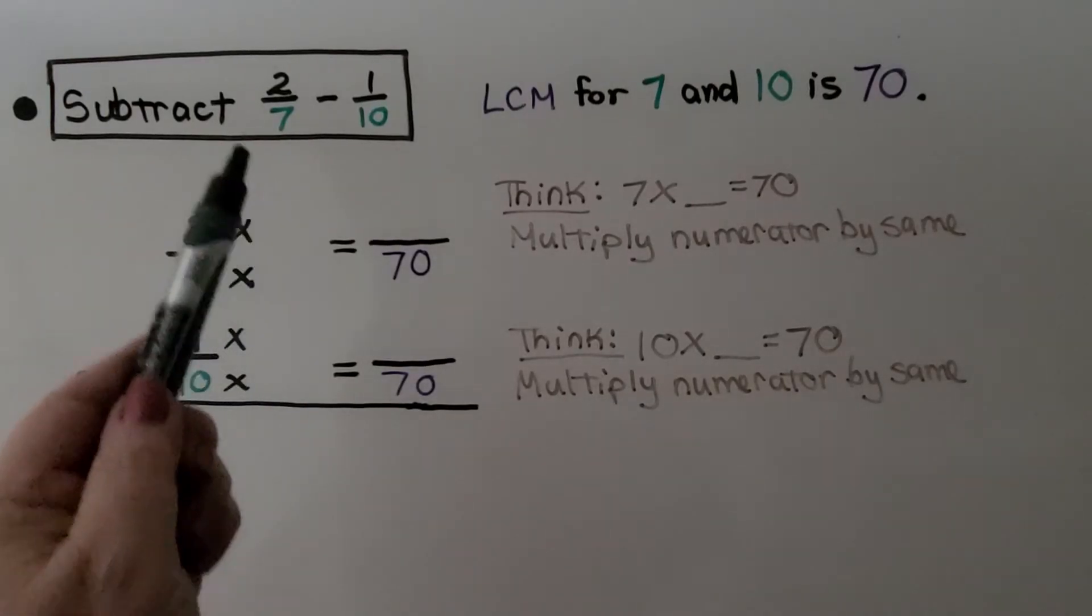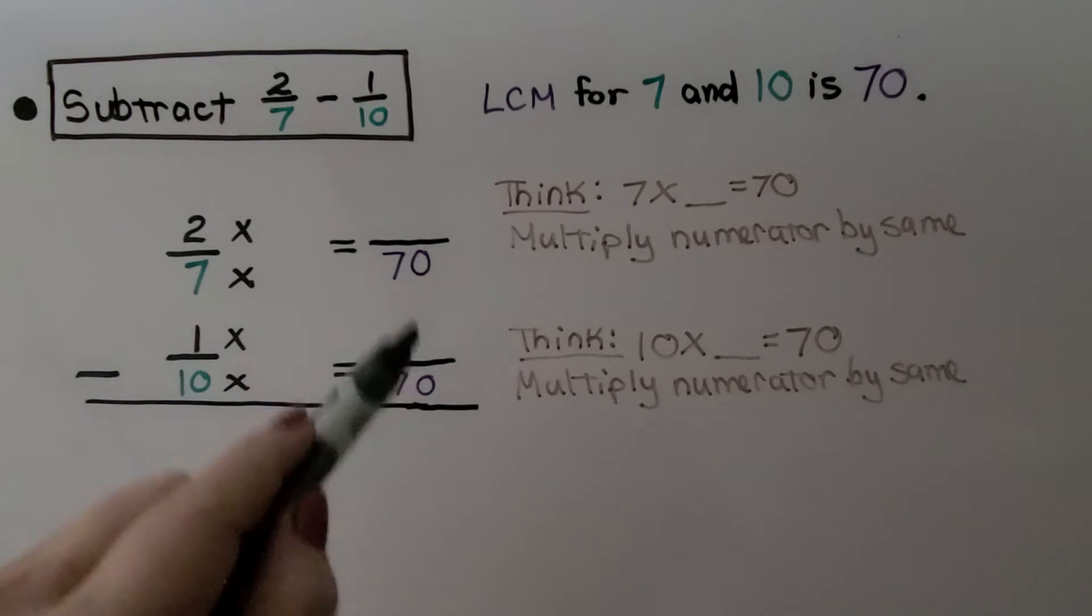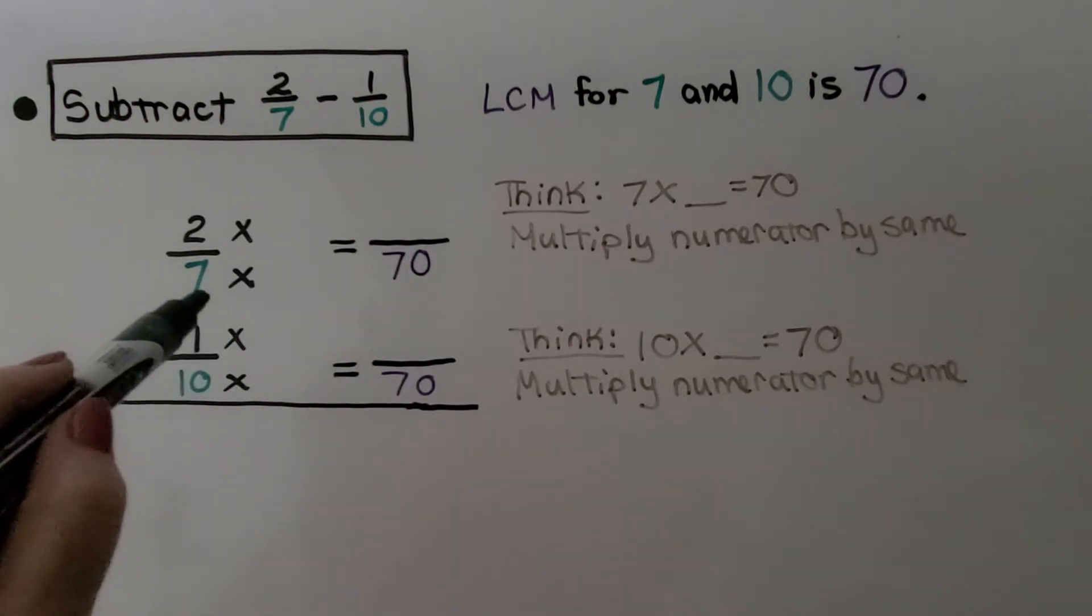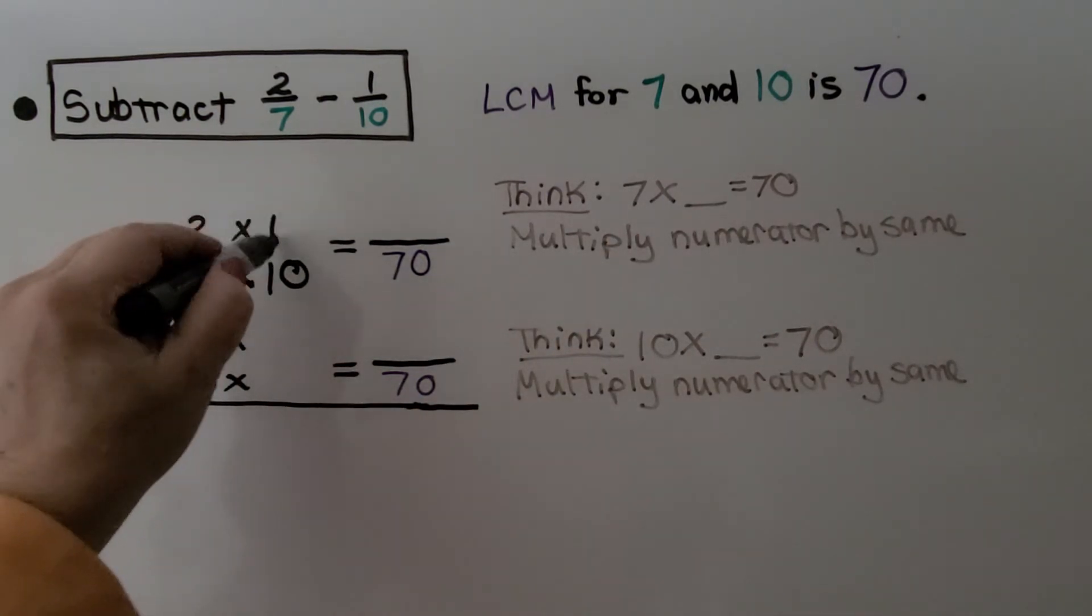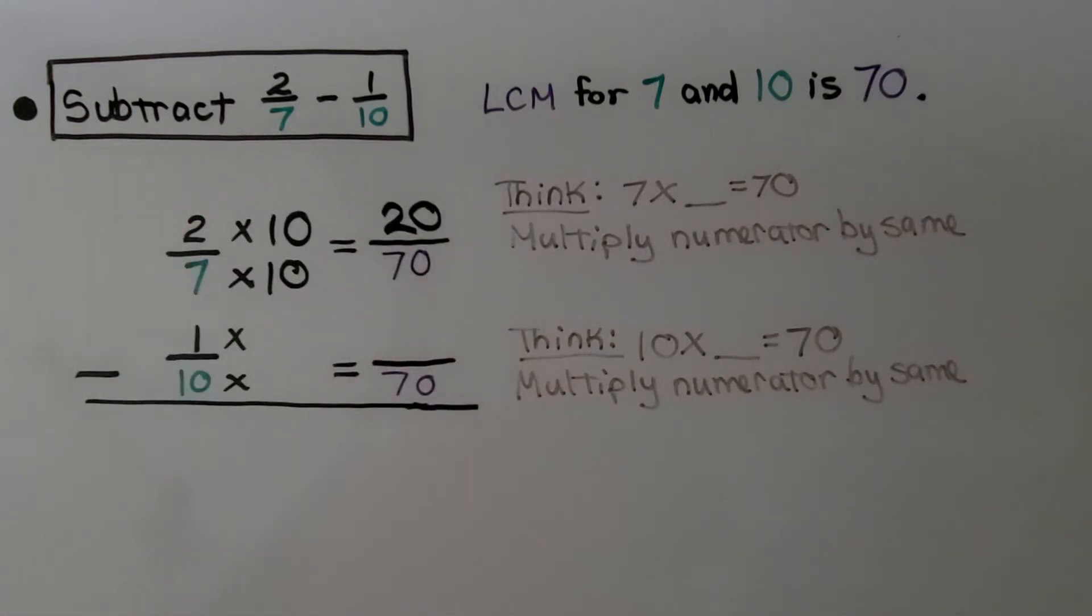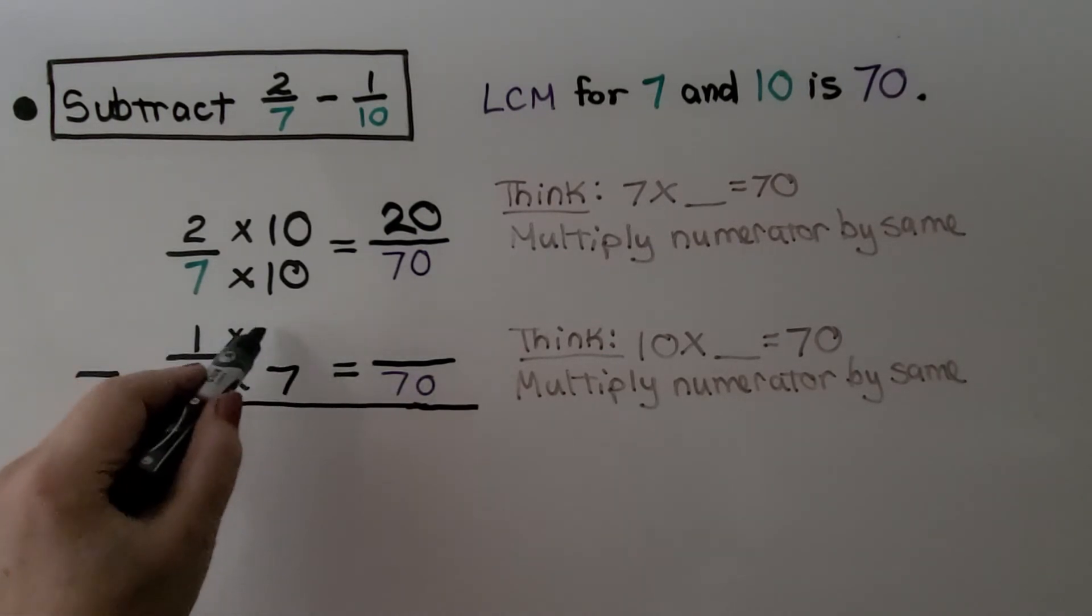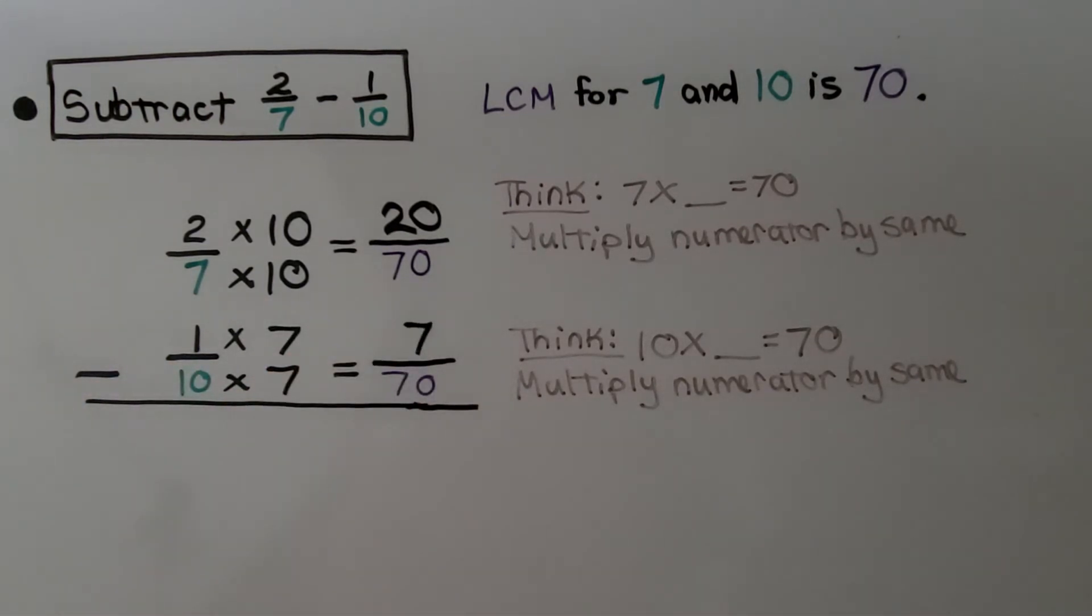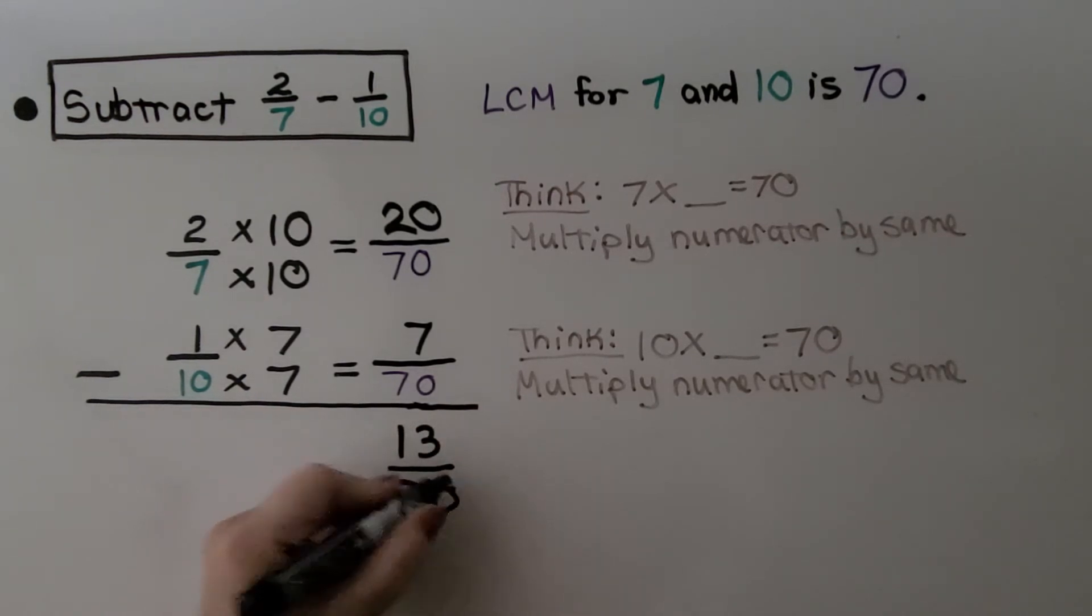Here we need to subtract 2/7 - 1/10. The least common multiple for 7 and 10 is 70. So they're going to meet at the common denominator 70. We think 7 times some number is 70. Well that would be 7 times 10, which means the numerator needs to be multiplied by 10, which means this is 20/70. And for 10 to become 70, it needs to be multiplied by 7, which means the 1 needs to be multiplied by 7, which means we have 7/70. Now they have the common denominator. We can subtract 20 - 7 is 13, and it'll be 70ths. And because the only factors for 13 are 1 times 13, we know that this is in simplest form.